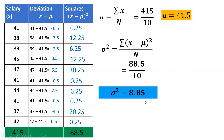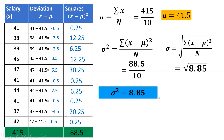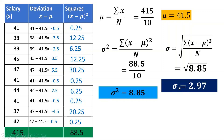Now let's find the standard deviation. The standard deviation is just the square root of the variance, so we take the square root of 8.85. The standard deviation of example number one is 2.97.